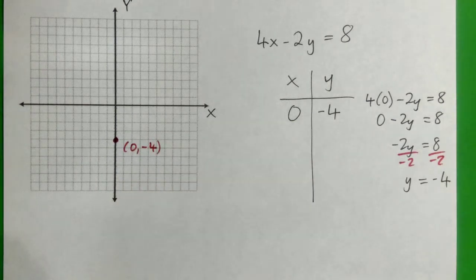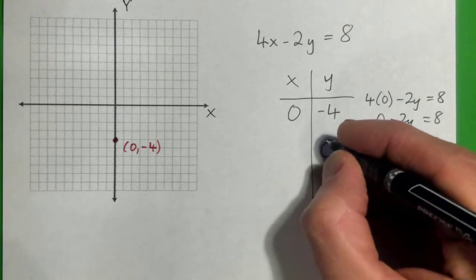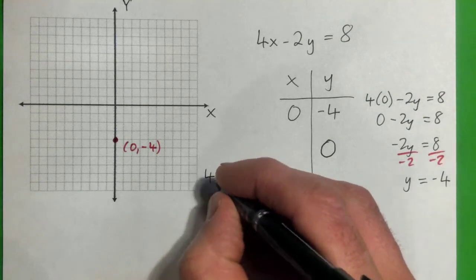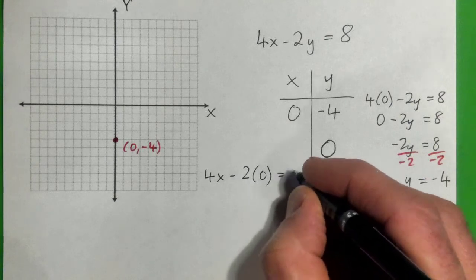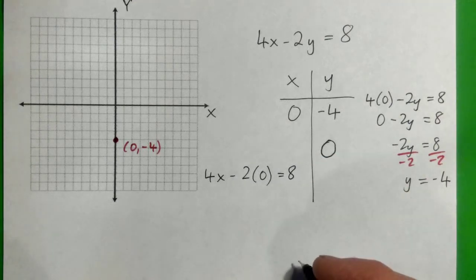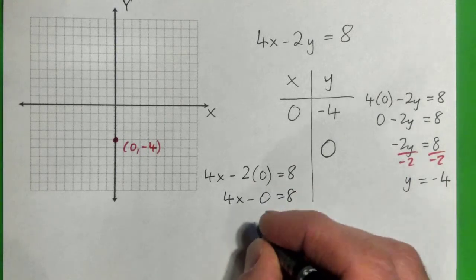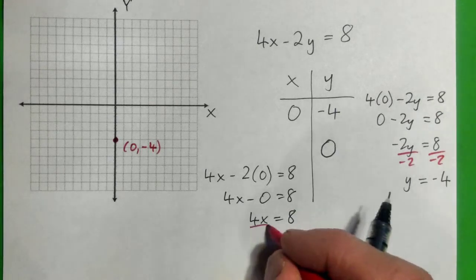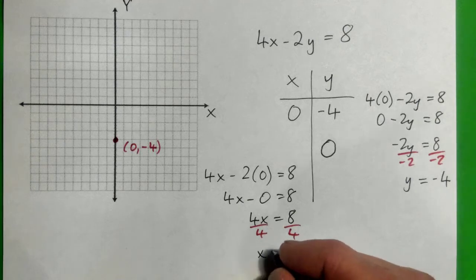So the next thing we're going to do is plug 0 in for y and figure out what x is. So we'll get 4x minus 2 times 0 equals 8, or 4x minus 0 equals 8, or just 4x equals 8. Then divide by 4, and x equals 2.